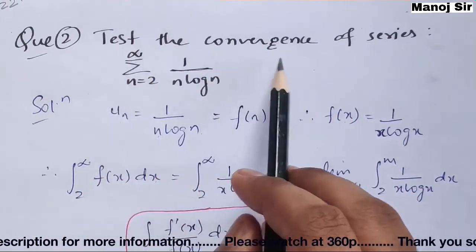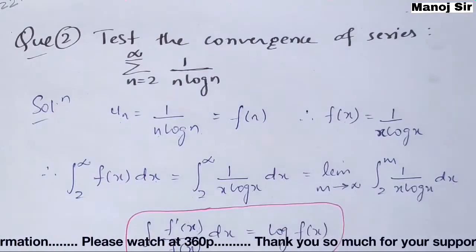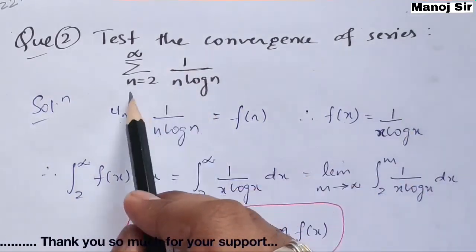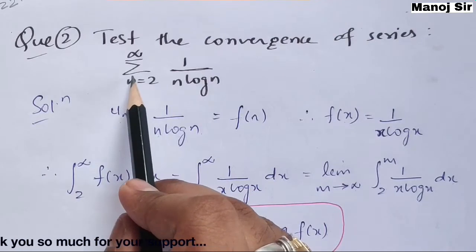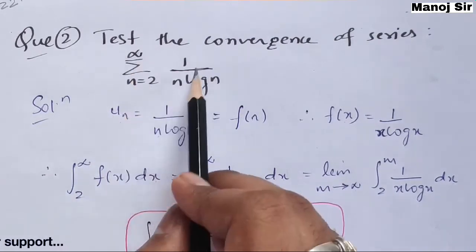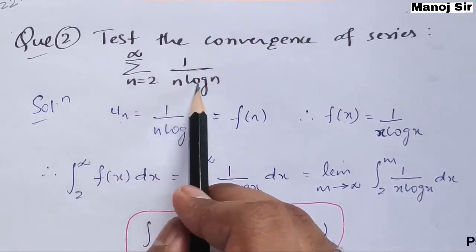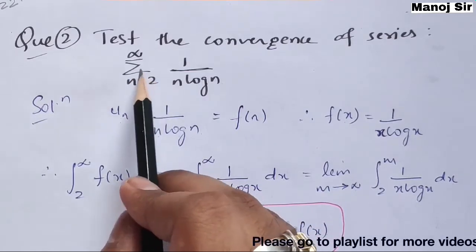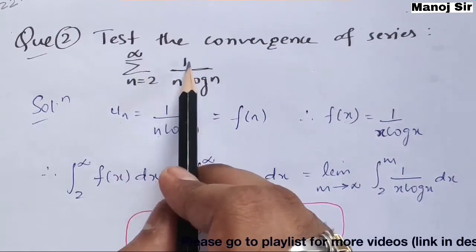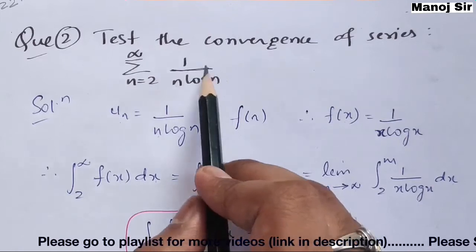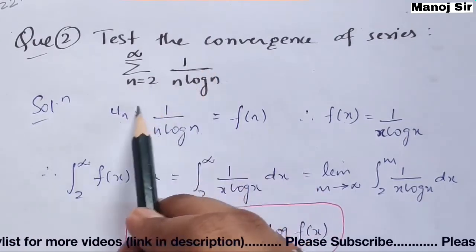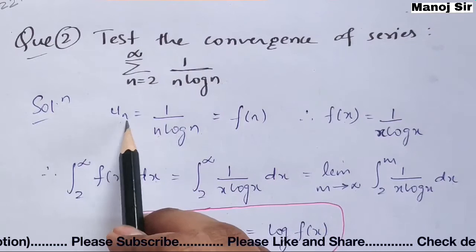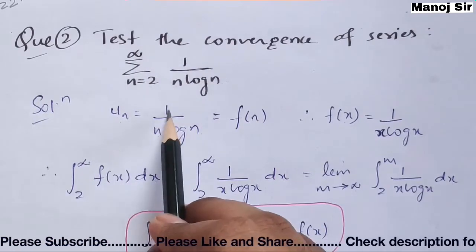Let us start with the problem: test the convergence of the series. Here we have a series and we need to test the convergence of the summation from n equals 2 to infinity of 1 upon n·log n. So this series is my given series and we need to determine whether it converges or diverges.